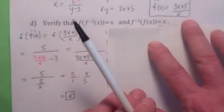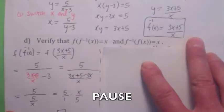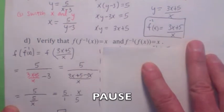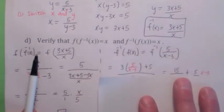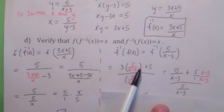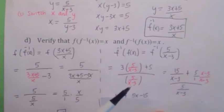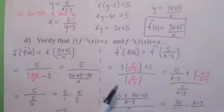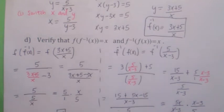Now see if you can find f inverse of f of x and get x back. f of x is 5 / (x − 3), so we compute f inverse of that. f inverse multiplies by 3, adds 5, and divides by the input. You get a common denominator of x − 3 on the numerator, multiplying by (x − 3)/(x − 3). On the numerator you get 5x − 15, and the 15's cancel, leaving 5x / (x − 3). Flipping over the bottom, the (x − 3)'s cancel and the 5's cancel, so you get x. It works.